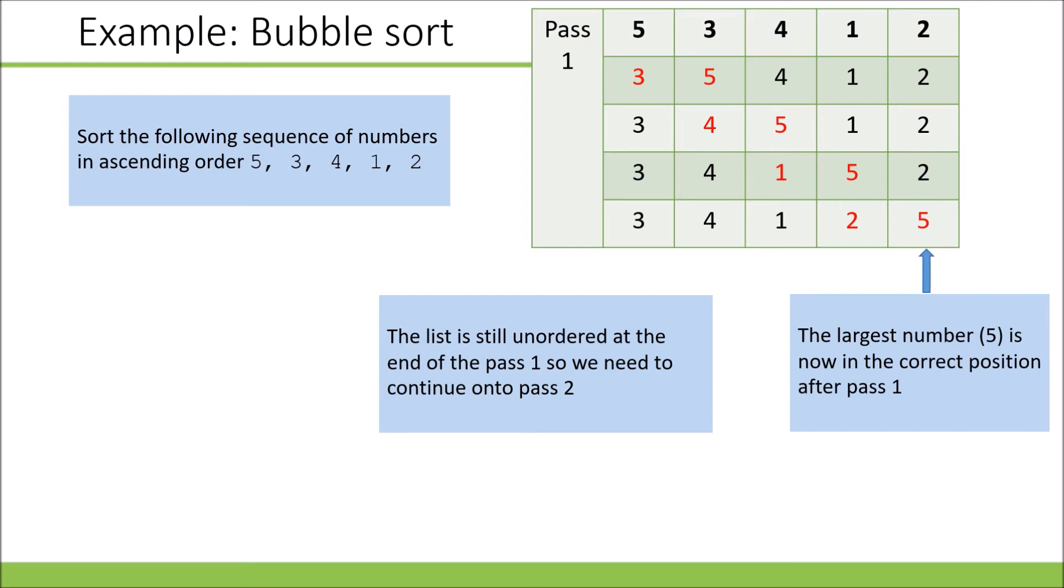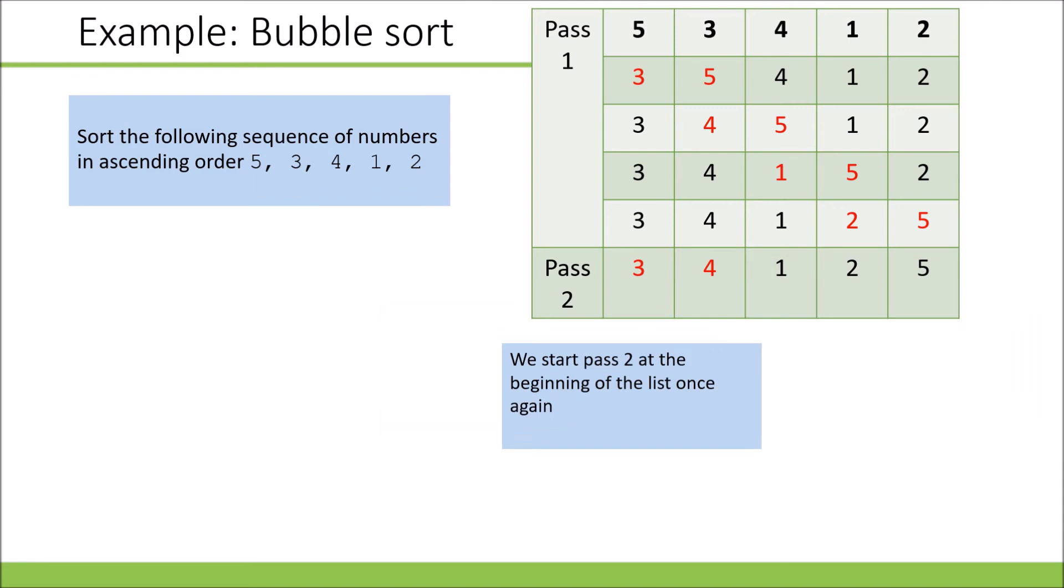Because the list is still unordered, we need to do a second pass. We compare three and four - they're in the correct order, so we don't need to do anything and can keep those as they are.